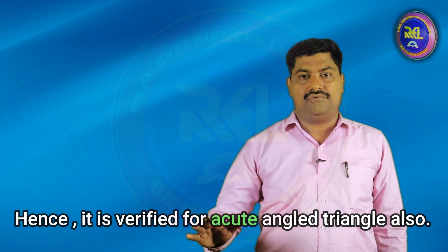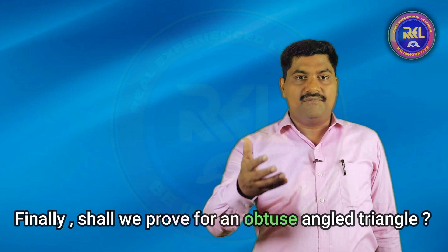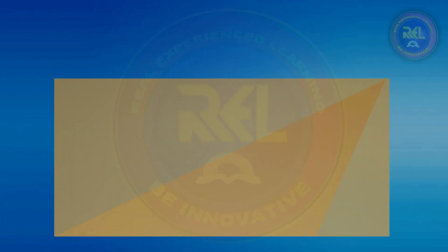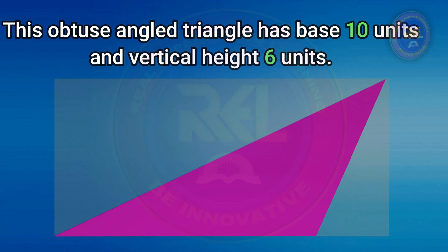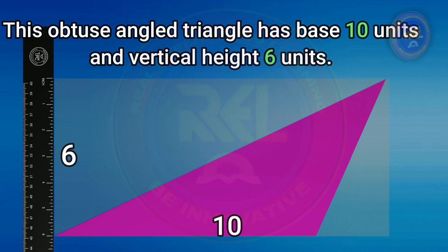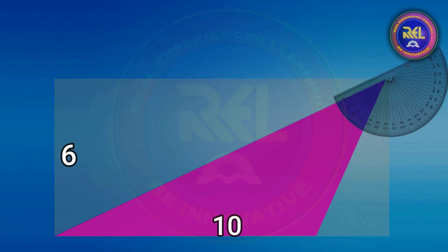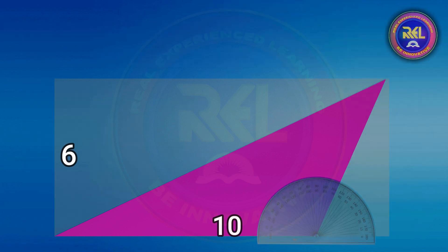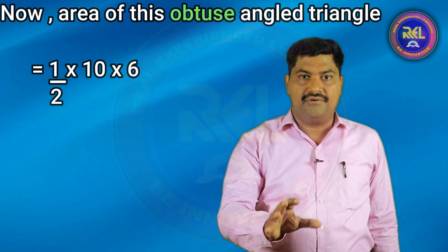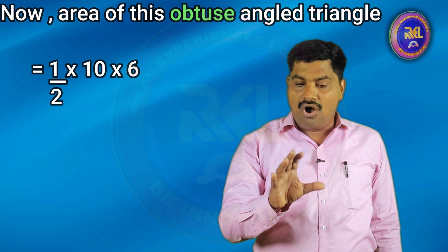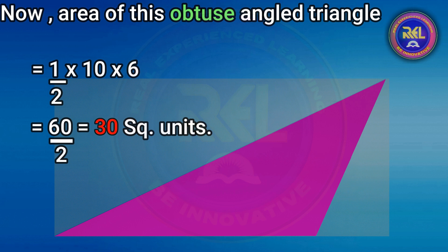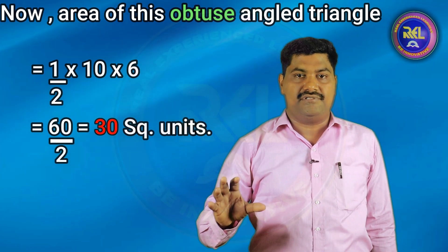Hence it is verified for the acute angle triangle also. Finally, shall we prove for an obtuse angle triangle? This obtuse angle triangle has base 10 units and vertical height 6 units. Area of this obtuse angle triangle equal to half into 10 into 6, equal to 60 by 2, equal to 30 square units.